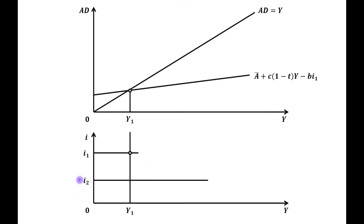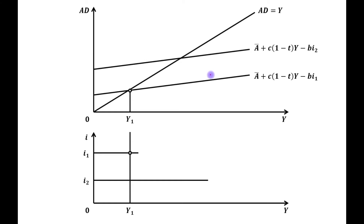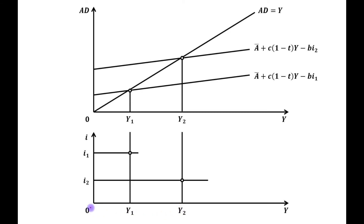Now suppose that the interest rate decreases from OI1 to OI2. This will lead to an upward shift in the AD curve. This will be the new equilibrium point, and this is the new equilibrium level of output, OY2. In the upper panel you can see the new equilibrium level of output OY2 at interest rate OI2. We will join these two points, and here is our IS curve.